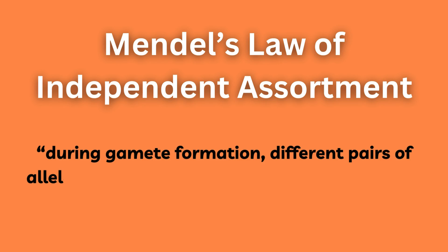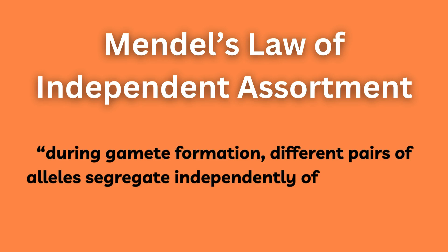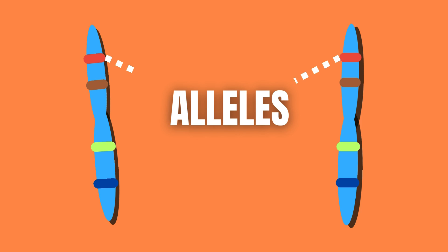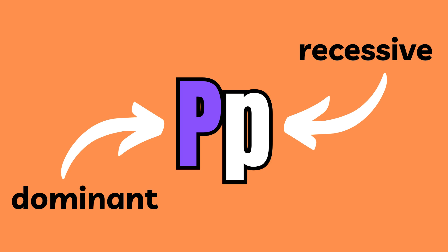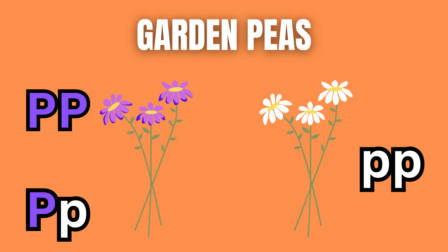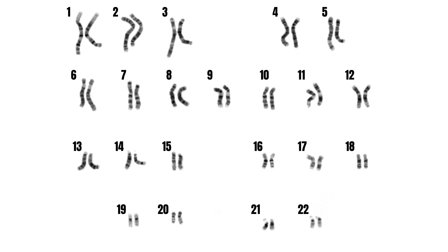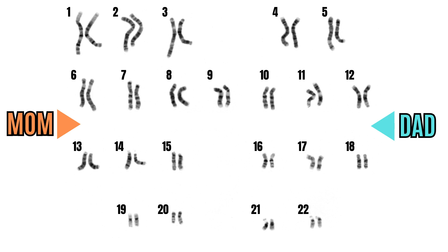Mendel's law of independent assortment states that during gamete formation, different pairs of alleles segregate independently of each other. Alleles are different versions of a particular gene, found at the same chromosomal location, and these alleles can either be dominant or recessive. Every individual has two alleles for every autosomal gene — one from dad and the other from mom.